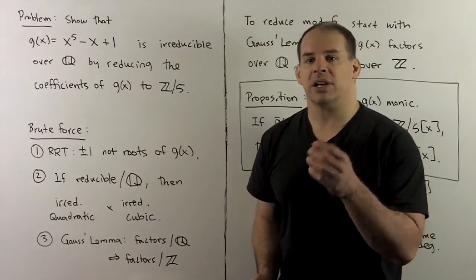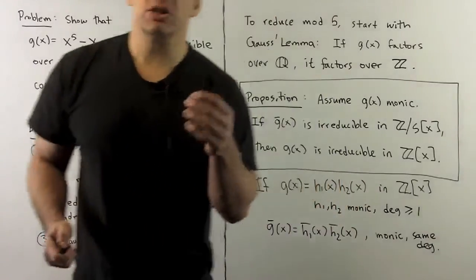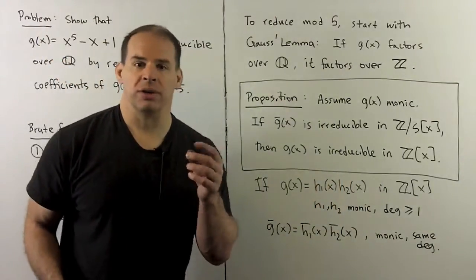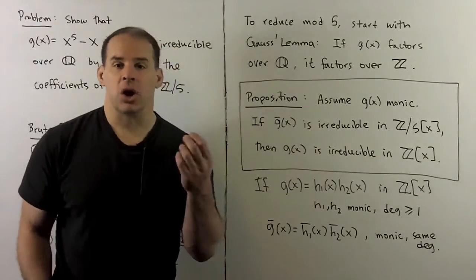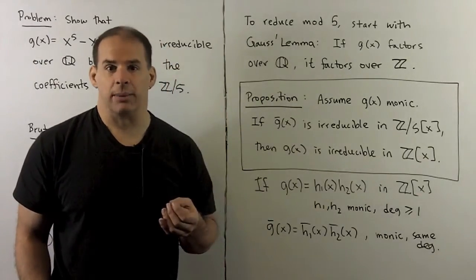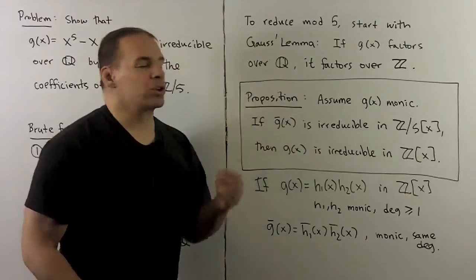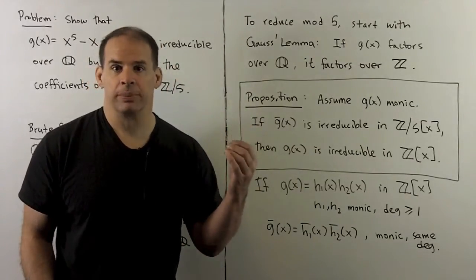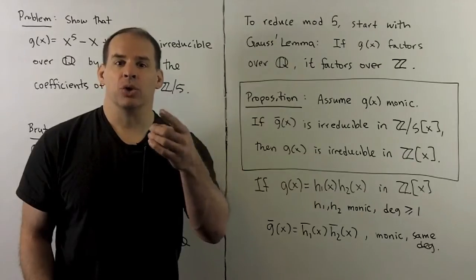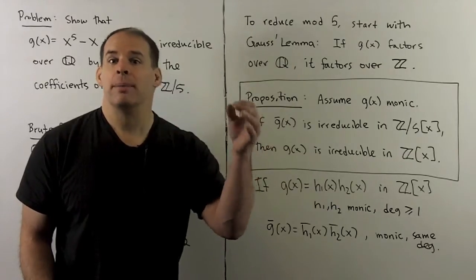We showed this in a different way, and that'll give us some factorization tricks using finite fields. Now, to start, we still use Gauss's Lemma. So if g factors over the rationals, then it has a non-trivial factorization over the integers. That lets us reduce the coefficients of the factors modulo five.